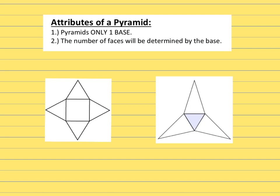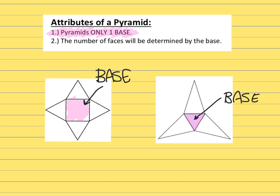The attributes of a pyramid: first of all, the most important thing is a pyramid only has one base, as opposed to prisms — prisms have two bases, pyramids only have one base. Looking at the two diagrams, I'm going to shade in the bases and label them, showing that I have identified the base of both. This one has a square base.